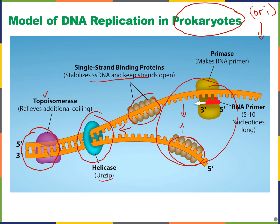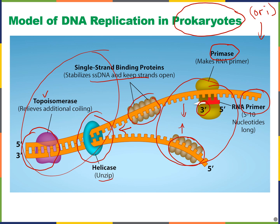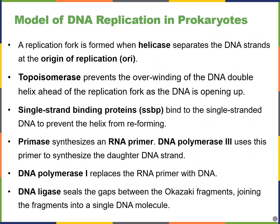An important challenge is that nucleotides can only be added to the 3' end of a growing strand, but at the very start of replication there is no existing 3' end to add to. So one of the first enzymes is primase, which lays down a small RNA molecule known as the RNA primer. This RNA primer provides a 3' end to which additional DNA nucleotides can be attached.